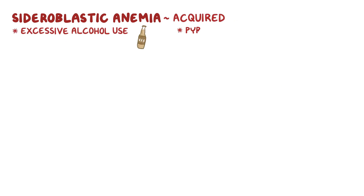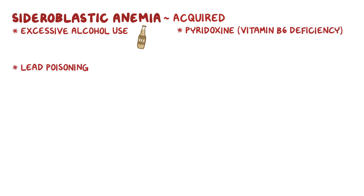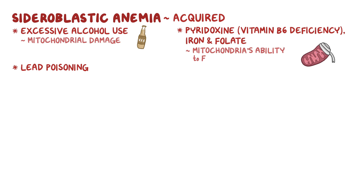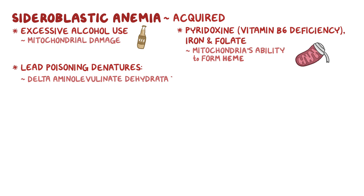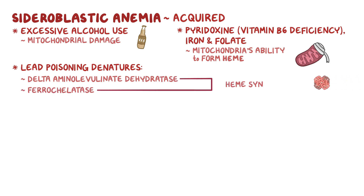The acquired causes of sideroblastic anemia include excessive alcohol use, pyridoxine or vitamin B6 deficiency, and lead poisoning. Excessive alcohol consumption can lead to mitochondrial damage and nutritional deficiencies like vitamin B6, iron, and folate, which affects the mitochondria's ability to form heme. Vitamin B6 deficiencies can also commonly happen as a result of isoniazid treatment for tuberculosis, as isoniazid attaches and inactivates vitamin B6. Lead poisoning has also been shown to denature enzymes important in heme synthesis, like delta-aminolevulinate dehydratase and ferrochelatase.